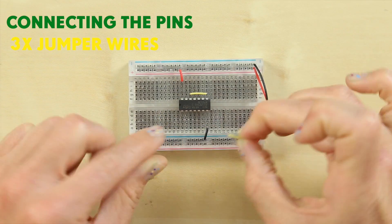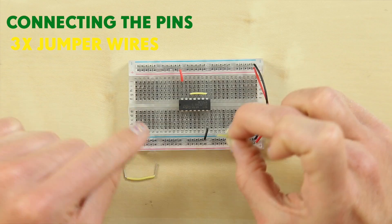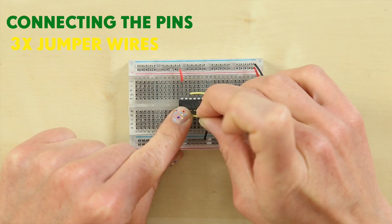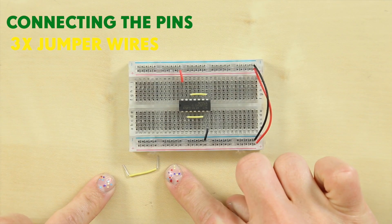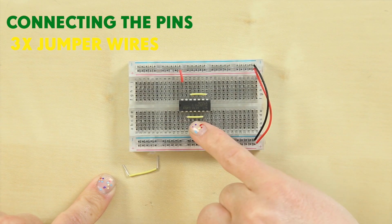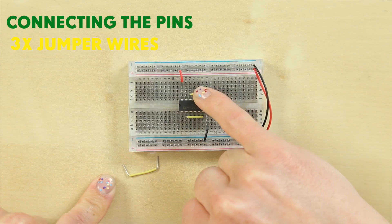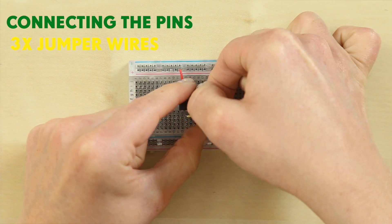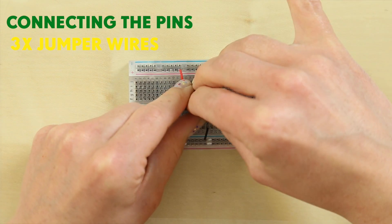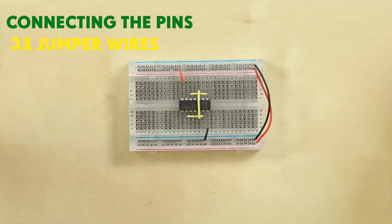Take your other yellow jumper wire to connect pin 2 to pin 6. Pop one leg in row 13 and the other leg into row 17. Now use the longer yellow jumper wire to connect pin 5 of the IC chip to pin 10. You're going to bridge right across the middle. So one leg in row 16 and the other leg in row 16 as well, straight across the middle.